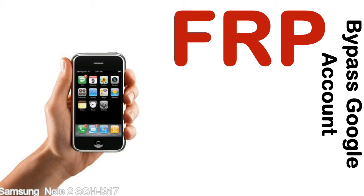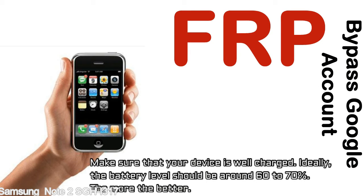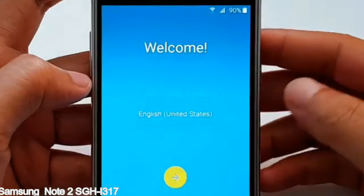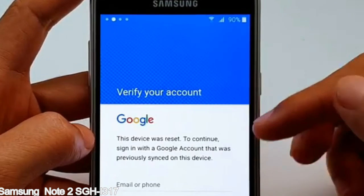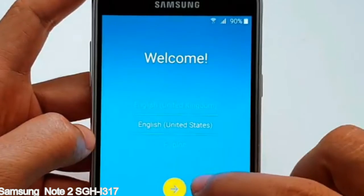Before starting: one, make sure that your device is well charged. Ideally the battery level should be around 60 to 70% — the more the better. Two, internet connection via WiFi. Here is a step-by-step guide on how to bypass the Google account on your Samsung Galaxy device.